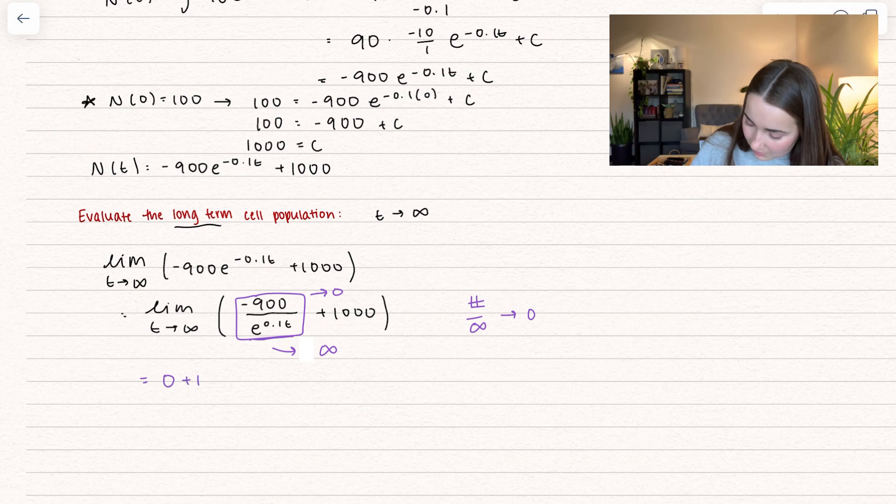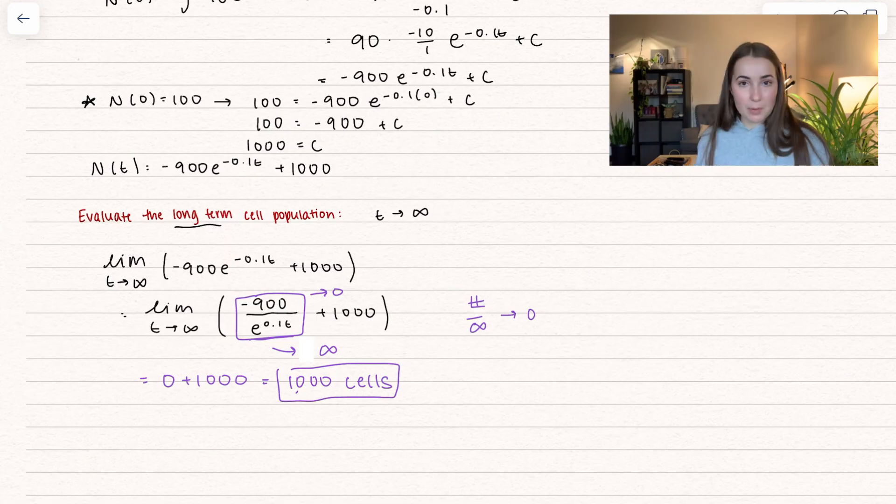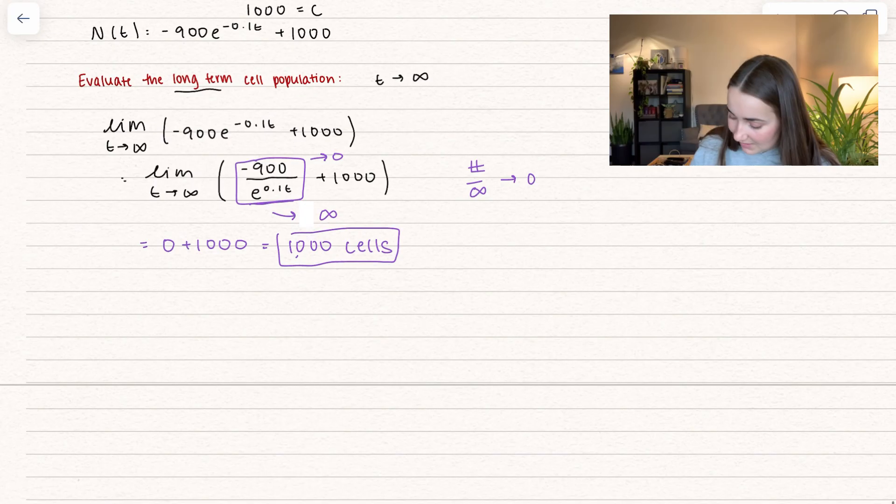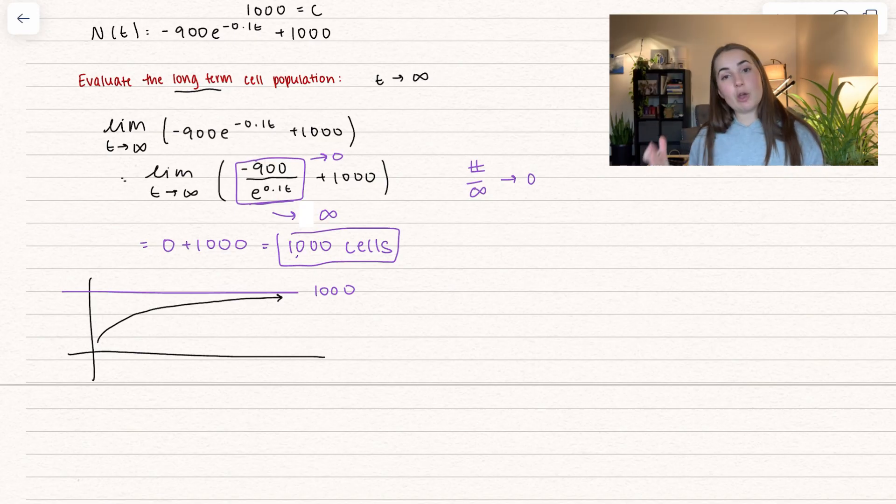This ends up being zero plus 1,000, which equals 1,000 cells. This tells us the maximum amount of cells we're ever going to have is 1,000. Our function is approaching that value of 1,000 in terms of cells, but it's never going to go above it, which tells us that's the maximum.